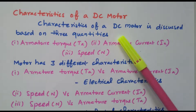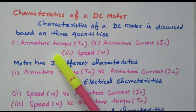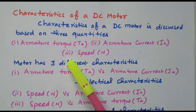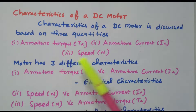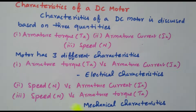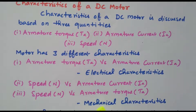The characteristics of a DC motor are discussed in three different quantities: the first one is armature torque, the second one is armature current, and the third one is speed. Based on these three parameters we can categorize three different characteristics. The first is armature torque versus armature current, called electrical characteristics. The second is speed versus armature current. The third is speed versus armature torque, called mechanical characteristics.